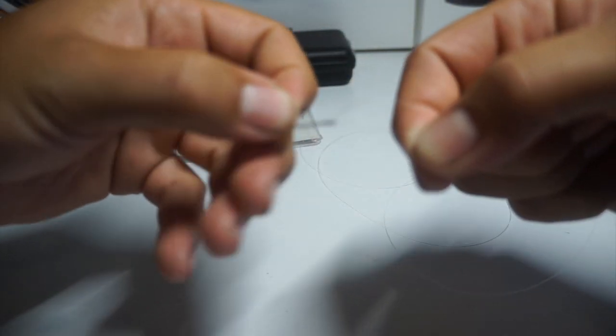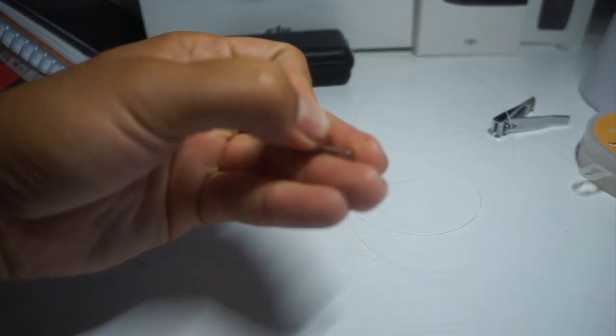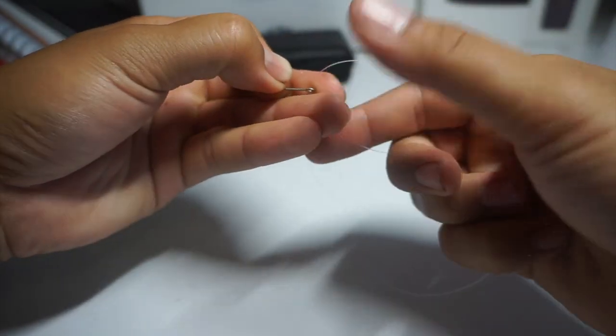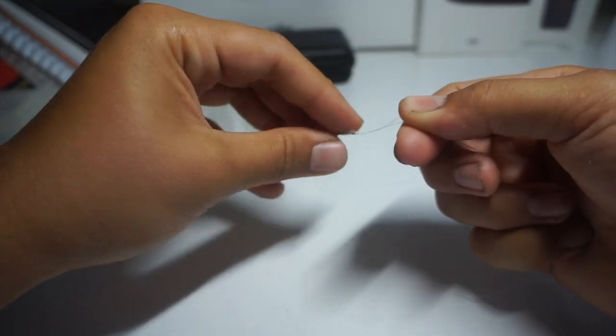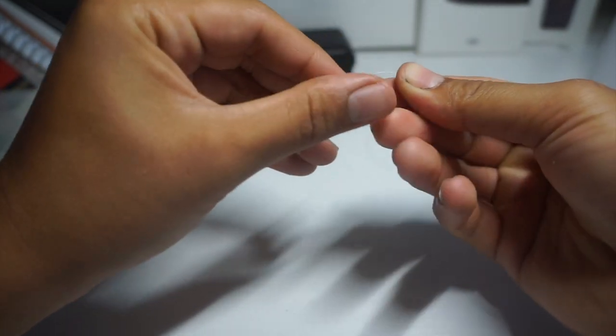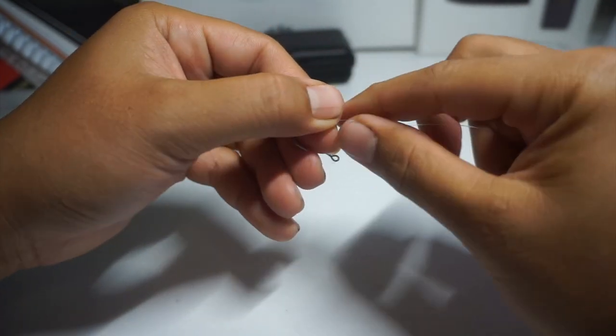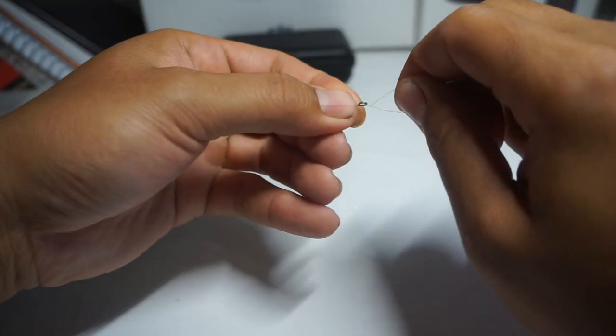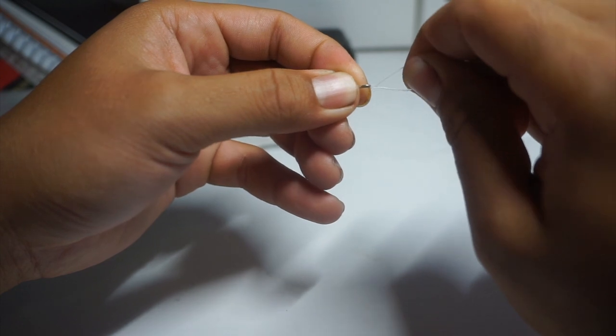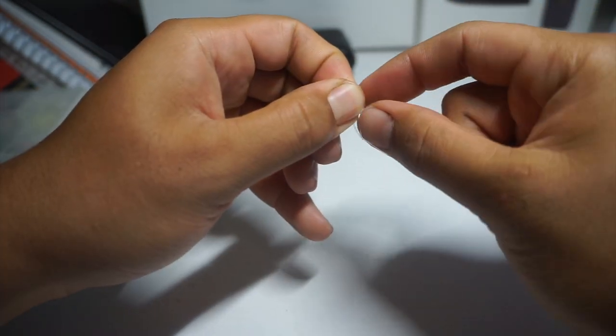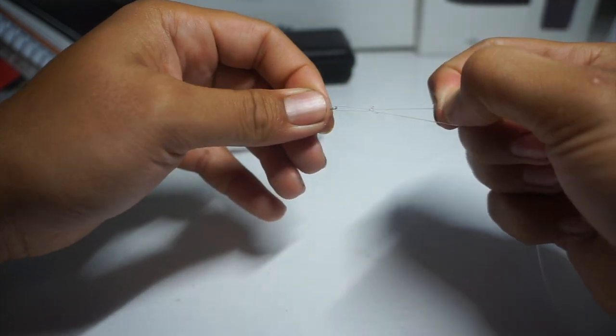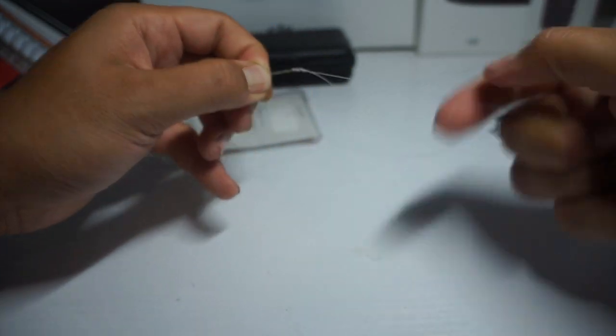We're going to tie this through. Again, same knot, blood knot. It's kind of out of focus over here. Spin this around three, four, five, six. Get this back in through right here, back through here, right here and pull it.